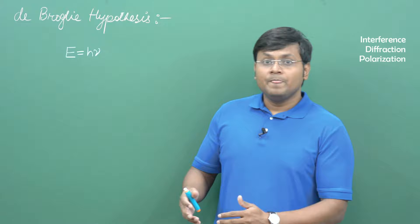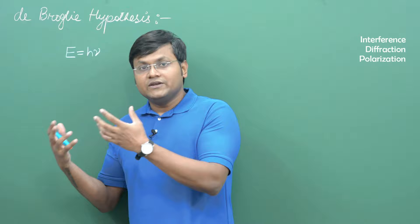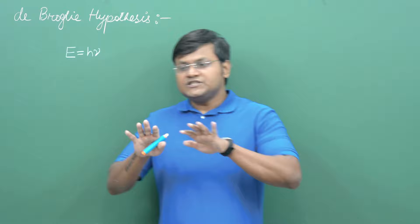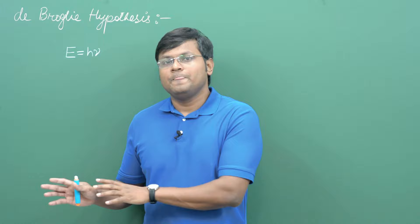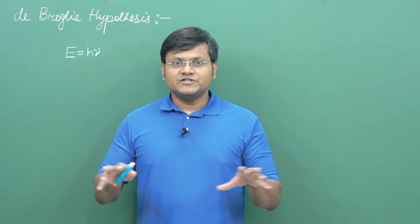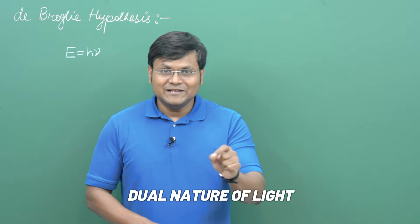But at the same time, light also demonstrates behaviors like blackbody radiation, photoelectric effect, and Compton effect that can only be explained by the photon picture of radiation. So the question is: what is light really - is it a wave or is it a particle? This split personality of light is what is today known as the dual nature of light.